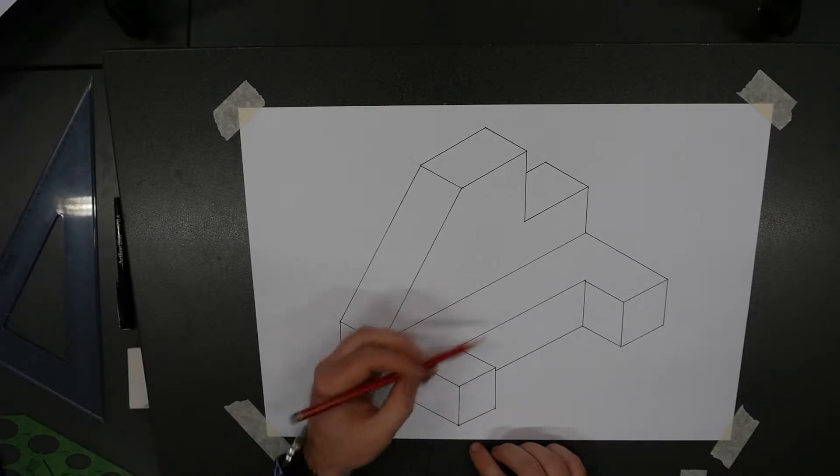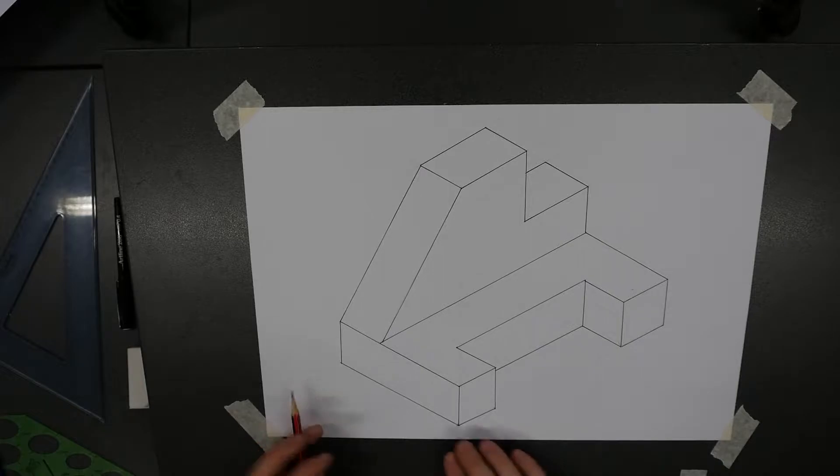So verticals remain vertical. Anything that recedes out to the left, which is potentially depicting the depth, that recedes at 150 degrees.